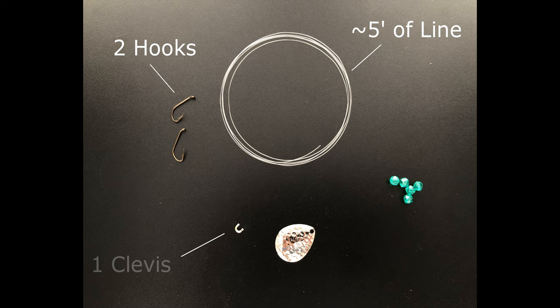Third thing you're going to need is a clevis, and this just allows the blade of the crawler harness to spin freely on the monofilament or leader material without damaging the line.